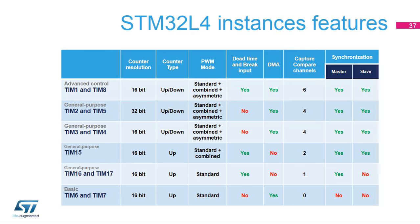The STM32L4 includes several timer instances. Timers 1 and 8 are full-featured, motor-control capable timers with all PWM options and six compare channels for generating three-phase PWM signals and two independent ADC triggers. Timers 2, 3, and 4 are general-purpose timers with all PWM modes, up-down counting capability, and four channels. Timers 2 and 5 additionally offer 32-bit counting range. Timers 15, 16, and 17 are light timers supporting standard PWM only with one or two channels and up-counting mode, complementing other timers with dead-time insertion and brake input for simple power systems. Timers 6 and 7 are pure time bases with no outputs, aimed principally to trigger DAC converters or provide software time bases.